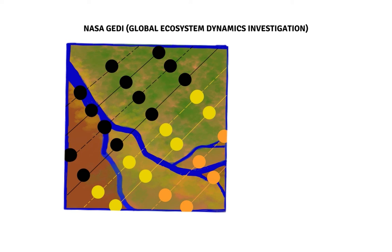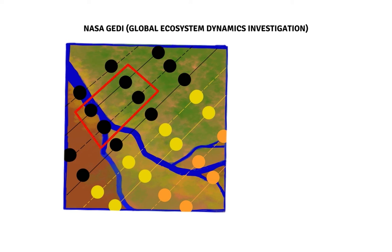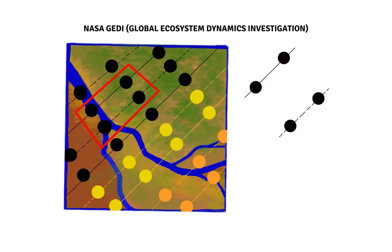And if we just take these four footprints or the two tracks here, the distance between the two tracks will be around 600 meters. And the individual GEDI footprints, which are the pulses represented by the dots here, are separated by 60 meters. Yep, the LiDAR footprints are not continuous. So that was a trade-off made here.